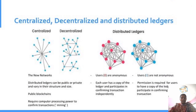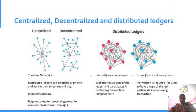We can see the difference between centralized, decentralized, and distributed ledger. A centralized system means one person can control all the things — for example, if you are studying in a school, the principal will deliberate all the rules. If it is decentralized, for every five to six groups, one group will have one owner. Next, a distributed ledger is one which is anonymous. Each user has a copy of the ledger and they can even participate in confirming the transaction independently.